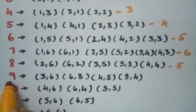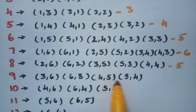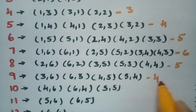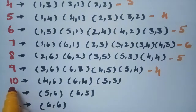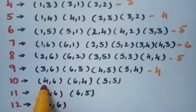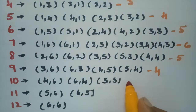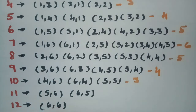For getting nine as a sum when two dice are thrown, the outcomes are (3,6), (6,3), (4,5), and (5,4) — four chances. For getting ten as a sum, the outcomes are (4,6), (6,4), and (5,5) — total three chances.